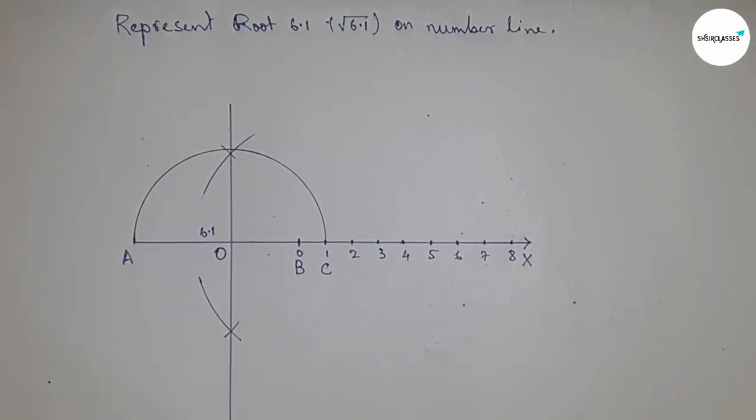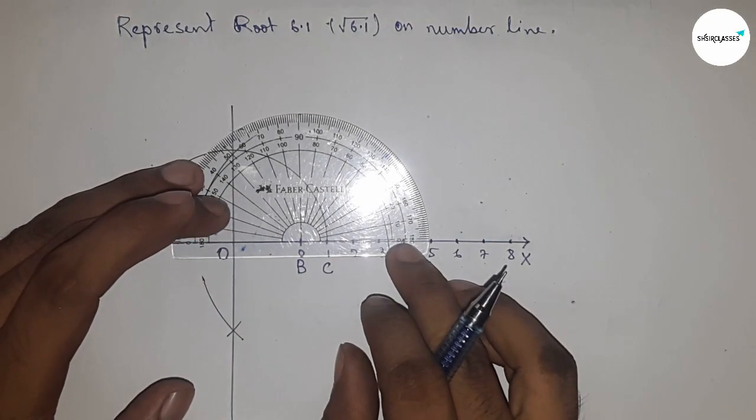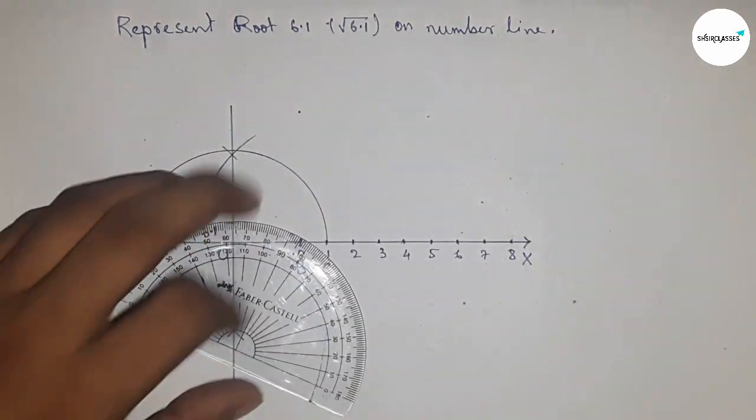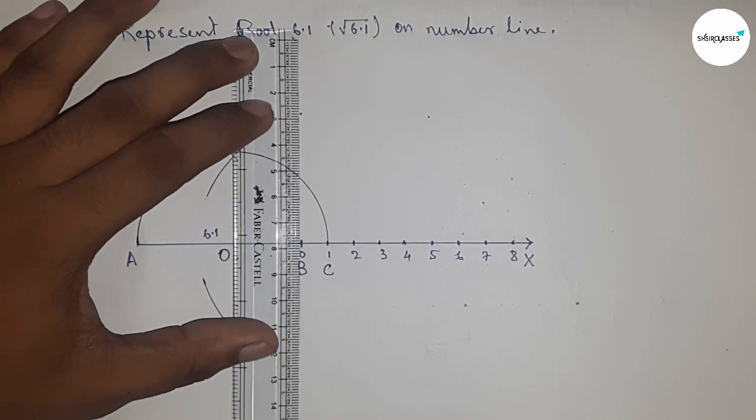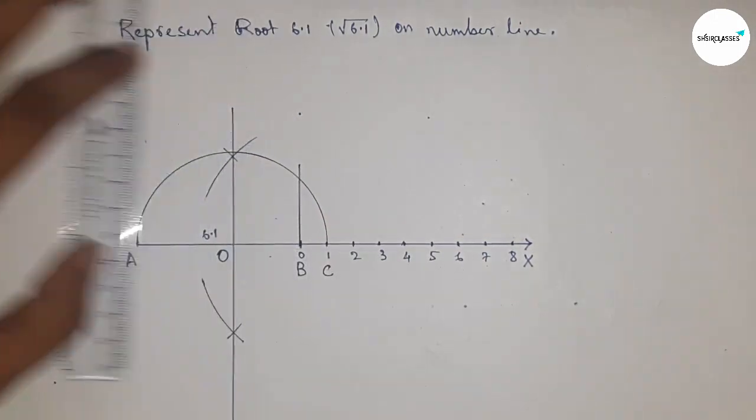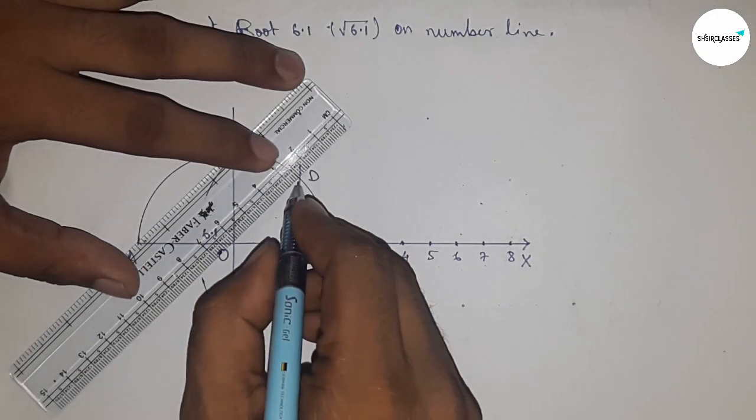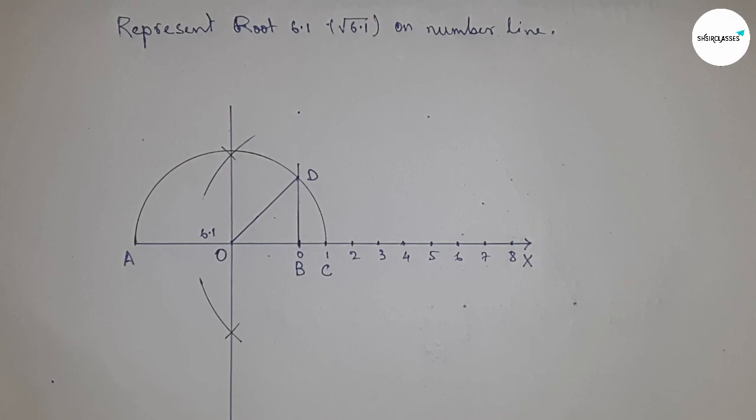Next, construct a 90-degree angle on point B by using a protractor, so this is 90 degrees. Next, join this, which meets the semicircle at a point D. Now join O and D, and take the length BD.